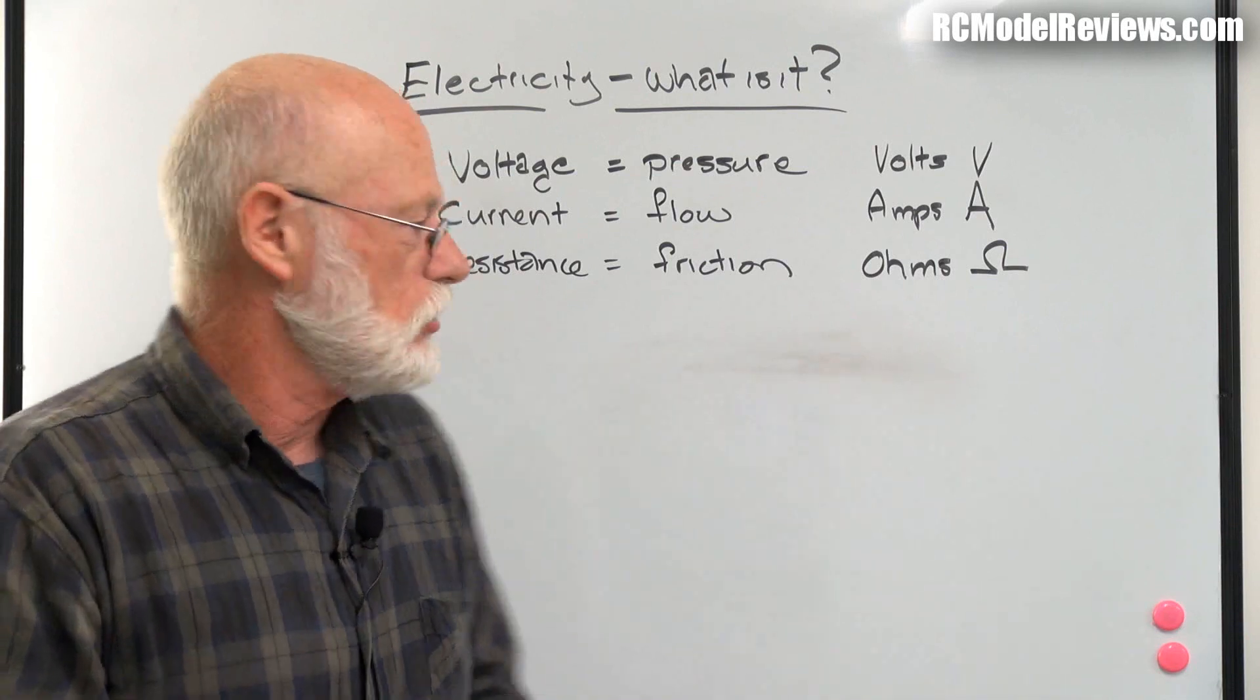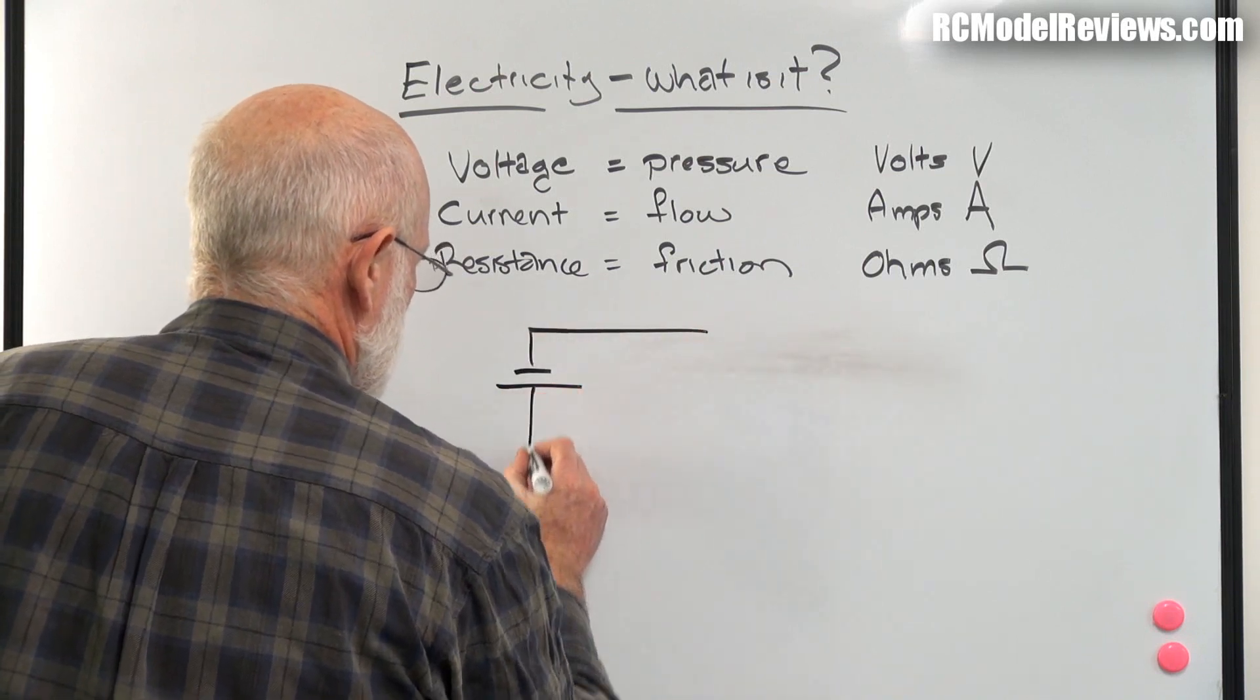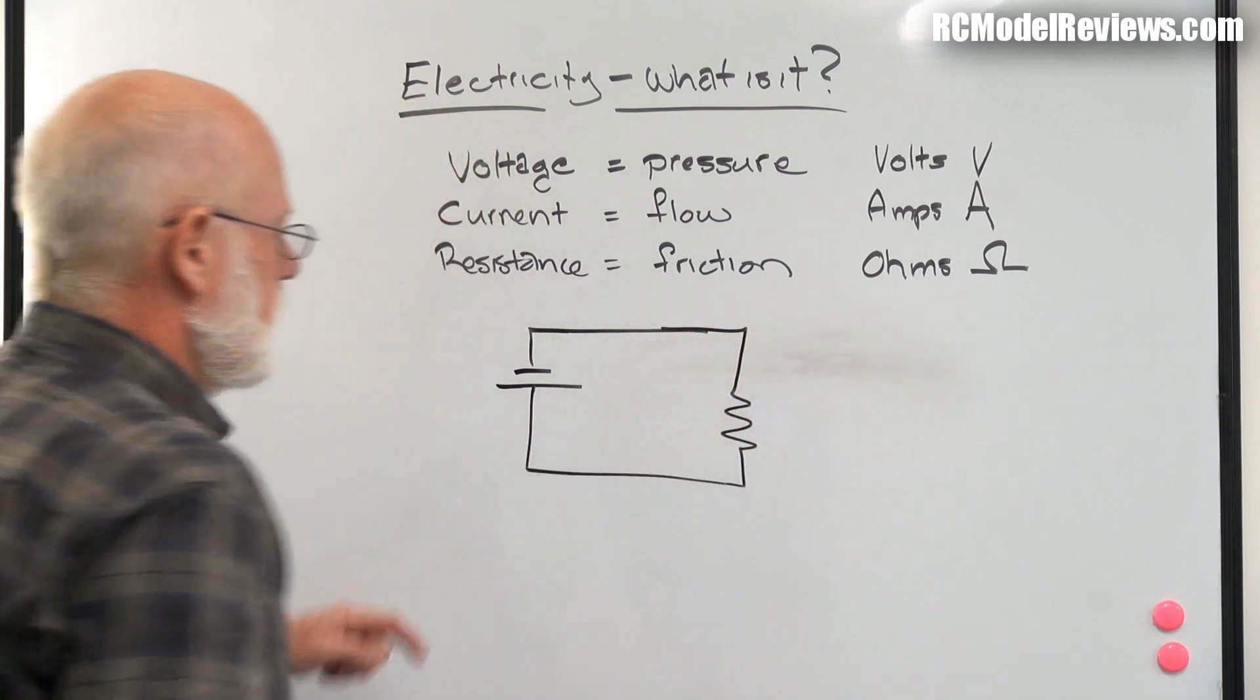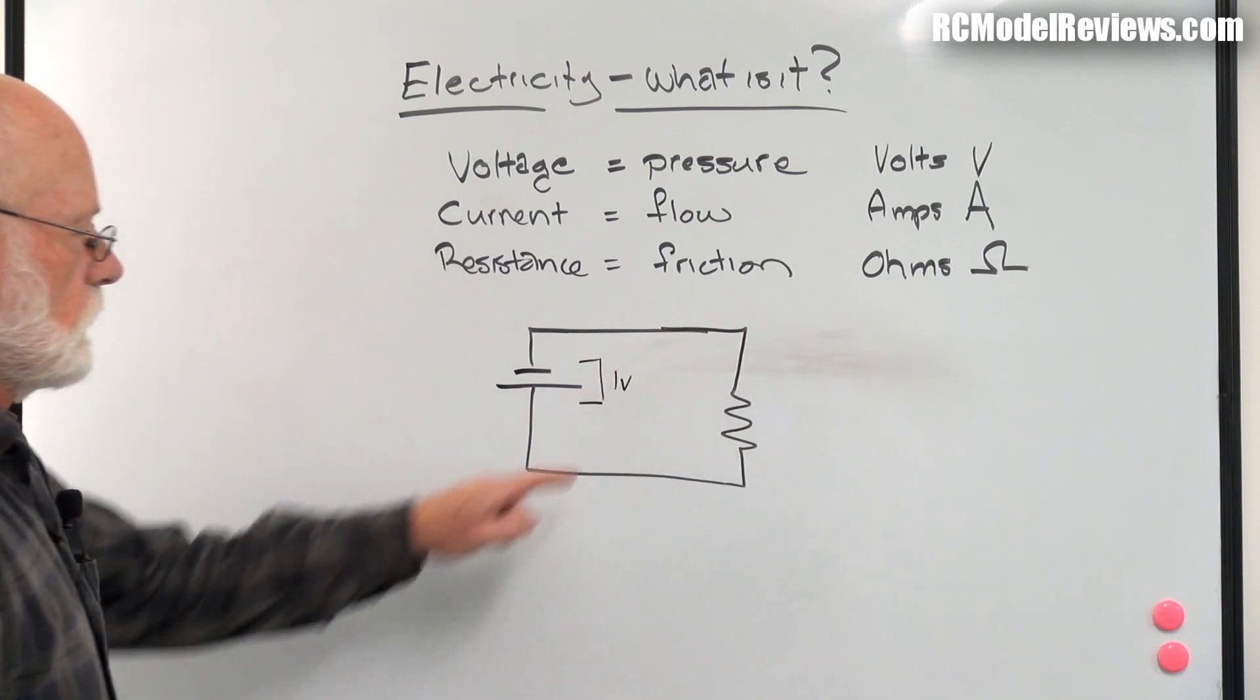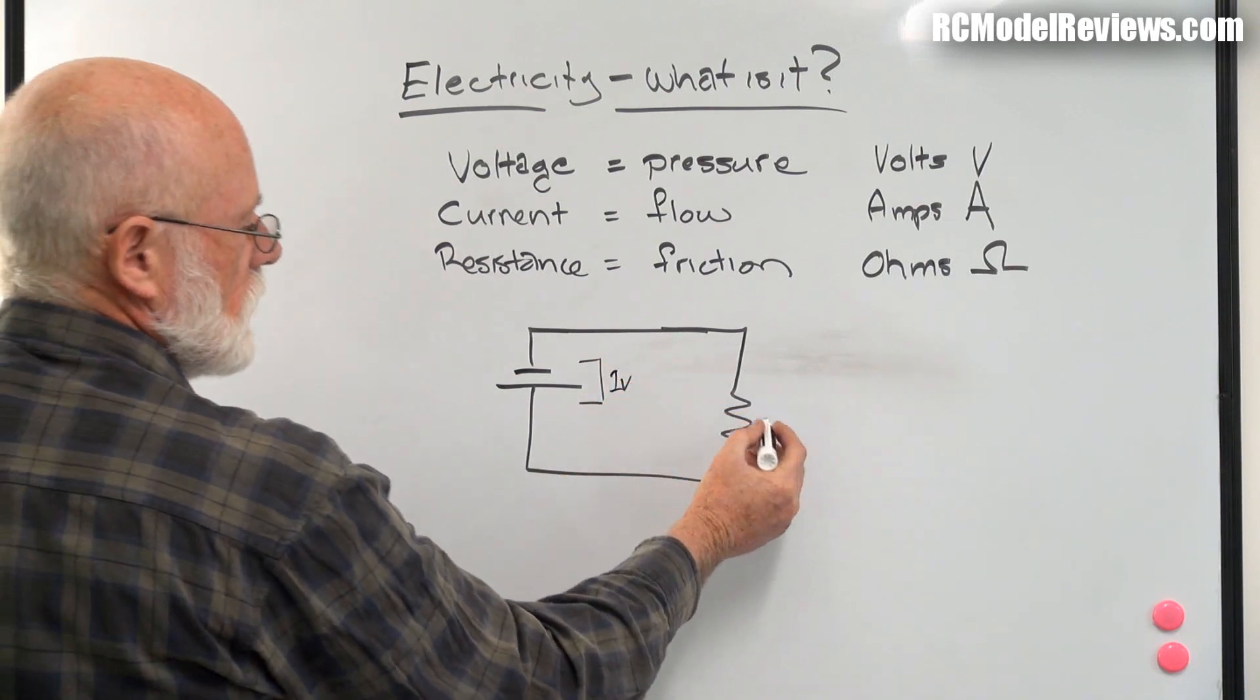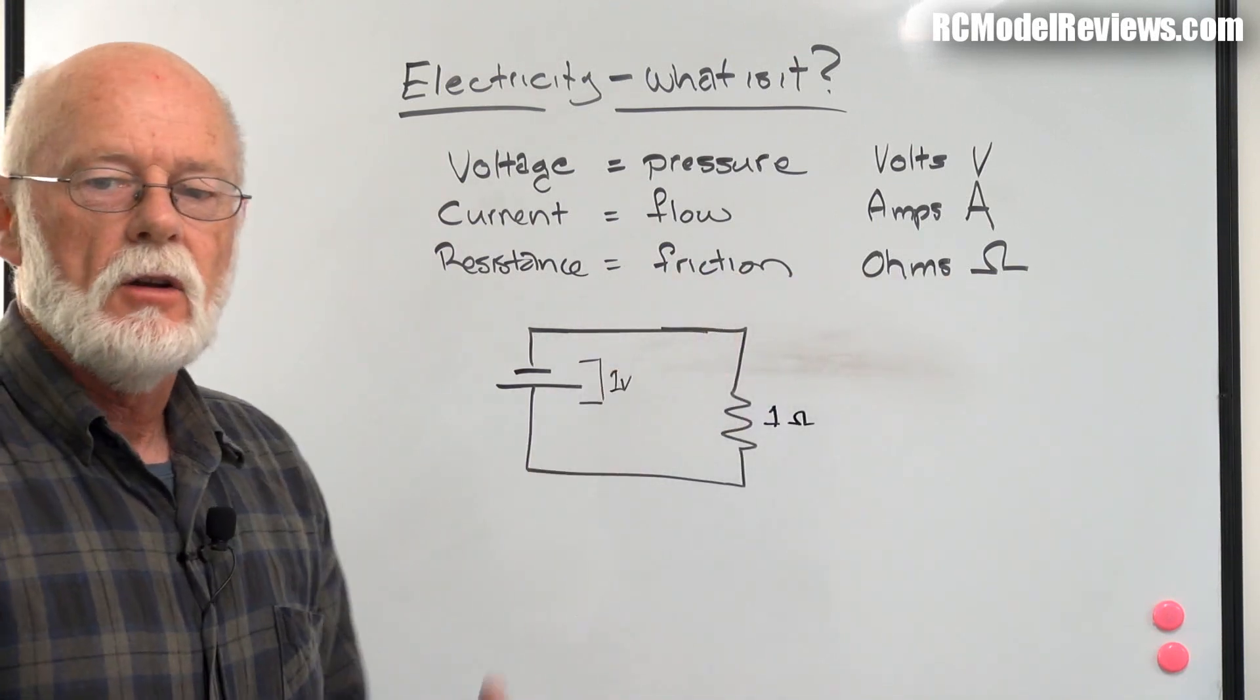These are the basic things that control the flow of electricity in a circuit. Let's draw a little circuit. We have a battery drawn like this, and we have a resistor drawn as a squiggle. There's a voltage on the battery - might be say one volt (1V).